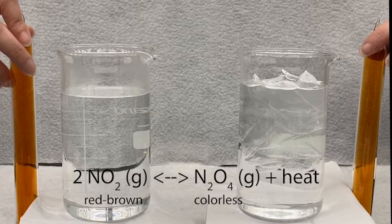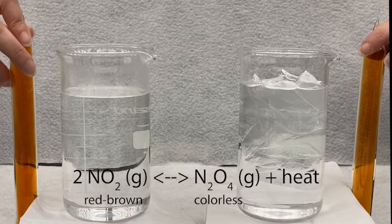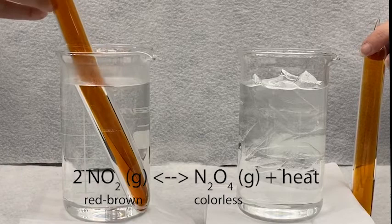Because this reaction is exothermic, heat is a product. Therefore, adding more heat to the reaction will shift it towards the red-brown reactants, the NO2.